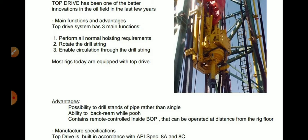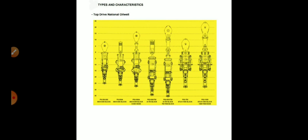Another advantage is the ability to back-ream while pulling out of hole. In the derrick there is a finger board at the topmost portion where the derrickman works — there is a pipe rack where he will rack back pipes during trip out or pull out of hole, and also when running in the hole he will take the pipes and put them in the elevator latching system. Additionally, TDS contains remote controls inside the BOP that can be operated at a distance from the rig floor. Top drive is built in accordance with API standards.